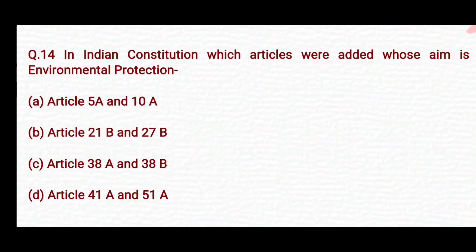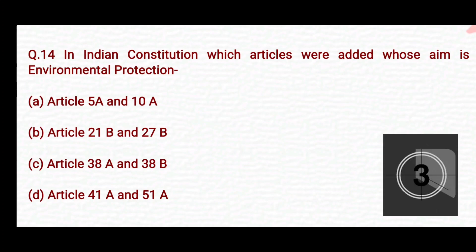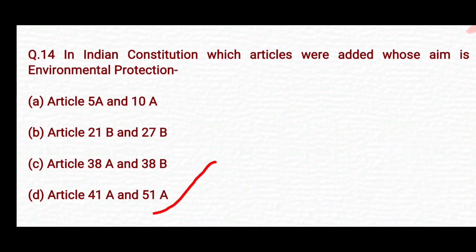In the Indian Constitution, which articles were added whose aim is environmental protection? Option A: Article 5A and 10A. Option B: Article 21A and 27B. Option C: Article 38A and 38B. Option D: Article 41A and 51A. The right answer is Option D — Article 41A and 51A.